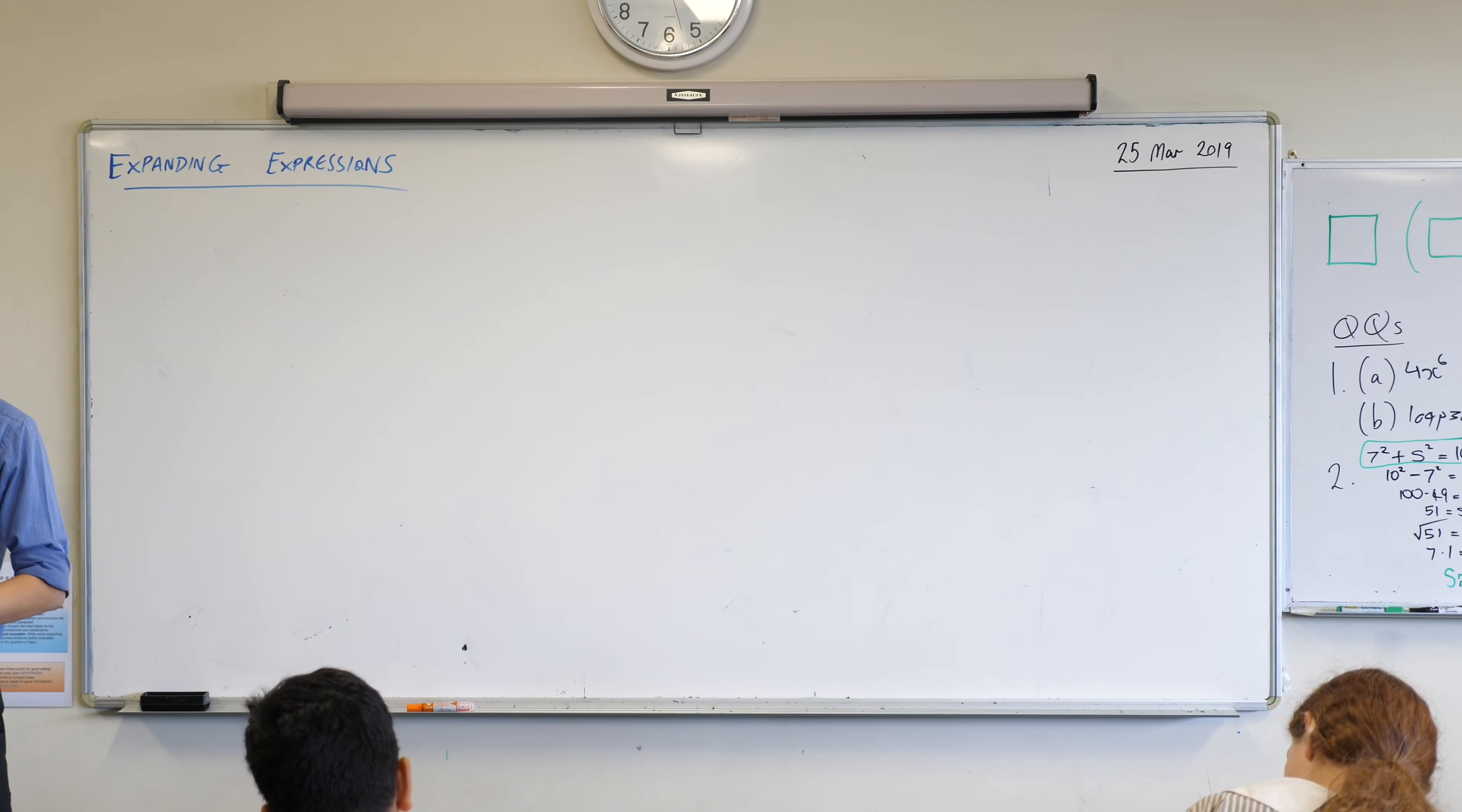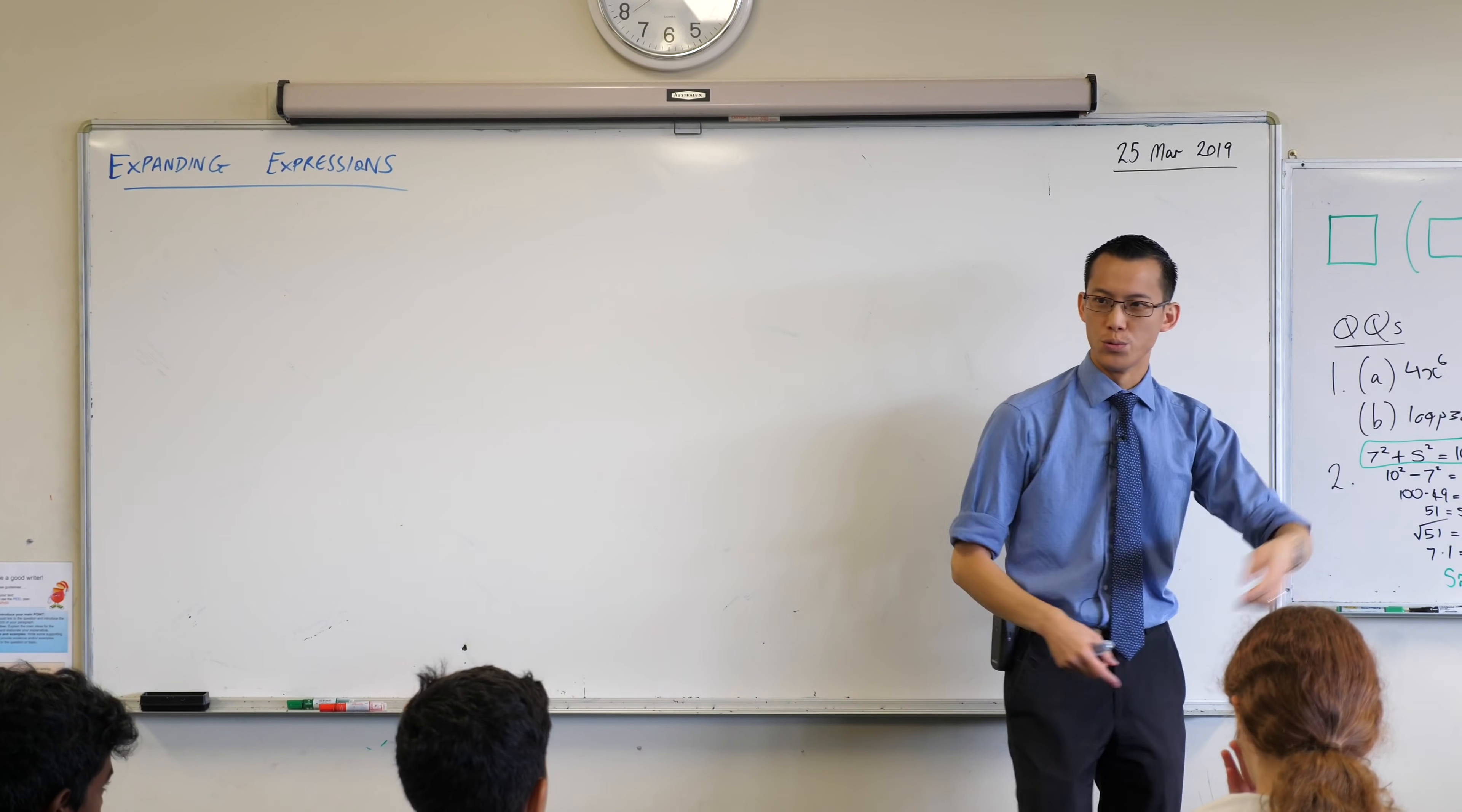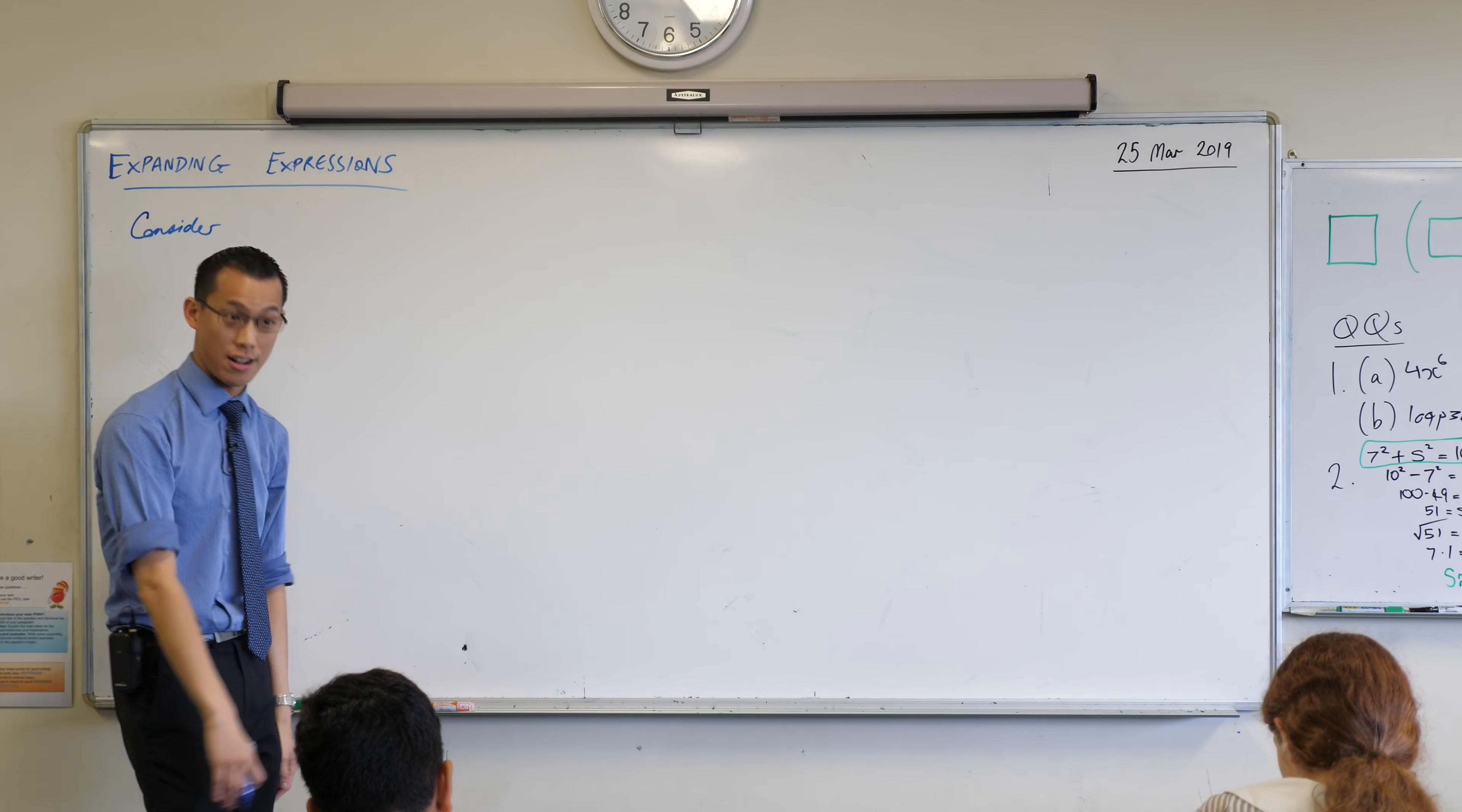We are in the topic of algebra at the moment, and so we're going to be learning a particular law, a particular shortcut to do with working with algebra. But as you recall, everything in algebra, like S's and P's and Q's, they just stand for numbers. That's why we call them pronumerals. So everything that we know about numbers applies to algebra. I'm going to start by considering something really simple to do with numbers, but then we're going to see how it applies to algebra.